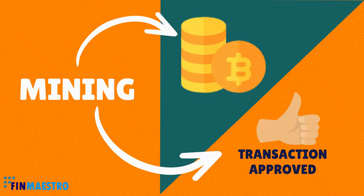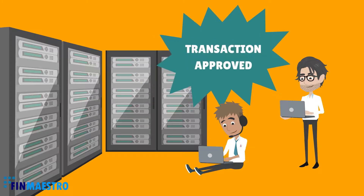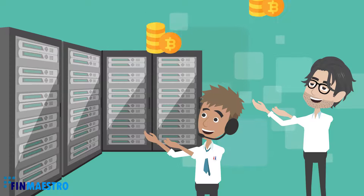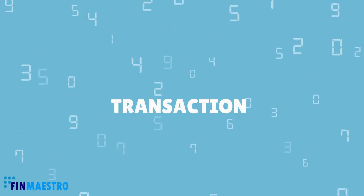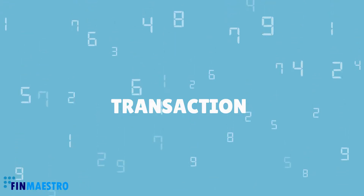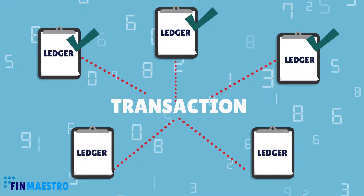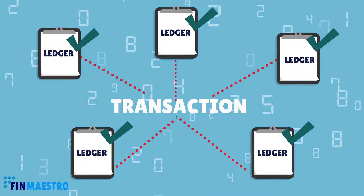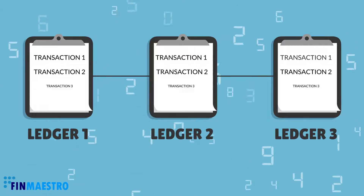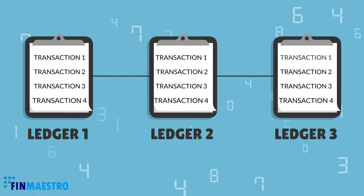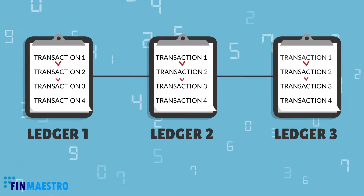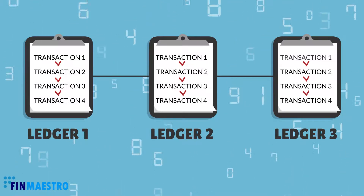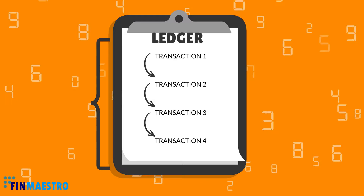Mining creates two events: one, a Bitcoin is generated; another, the transaction is approved. Once the transaction is approved, the miner receives a Bitcoin and the transaction is added to all the publicly available ledgers. Every transaction is sequentially stored in all the ledgers and linked to the previous transaction.